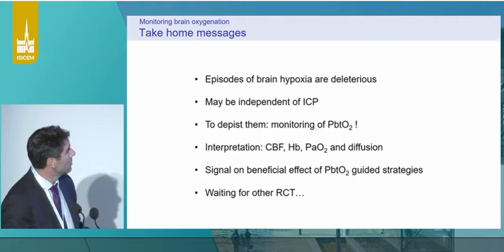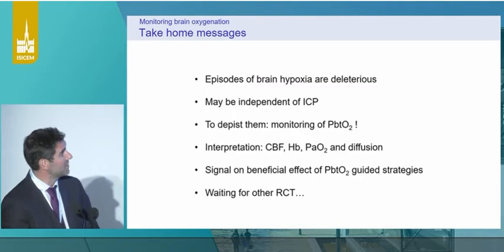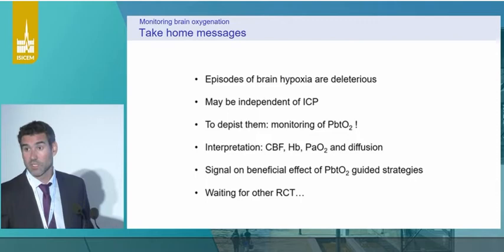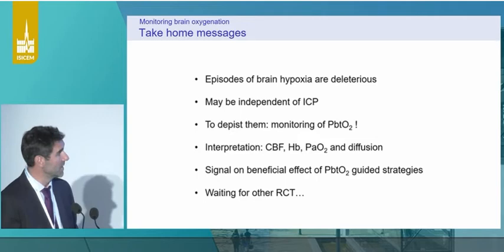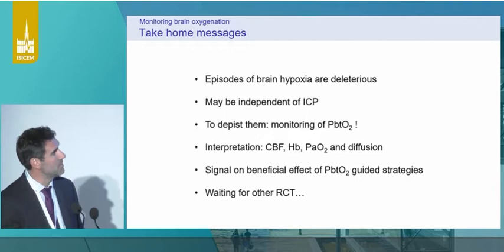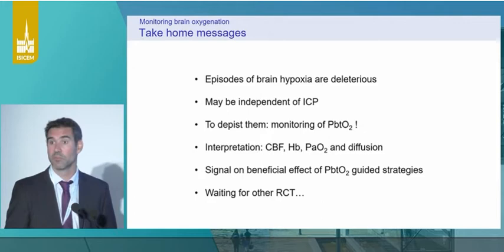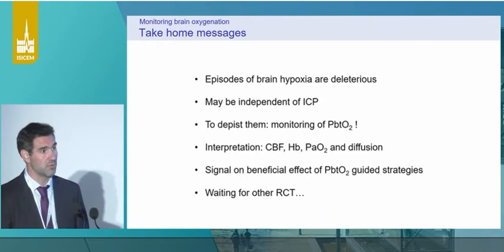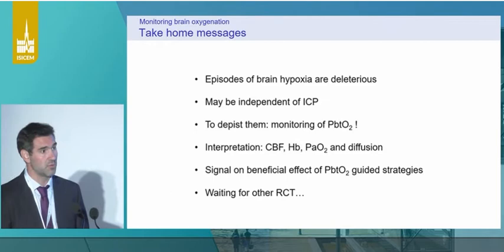For take-home messages: I hope you are convinced that episodes of brain hypoxia are deleterious and may be independent of ICP — that is really important. To detect them, you have to monitor PbtO2 — it is the only way to detect brain hypoxia right now. The interpretation is quite tricky: you have to integrate CBF, hemoglobin, PiO2, and diffusion. And there is a signal in the literature that a PbtO2-guided strategy may be beneficial, but we have to wait for our clinical trial. Thank you for your attention.